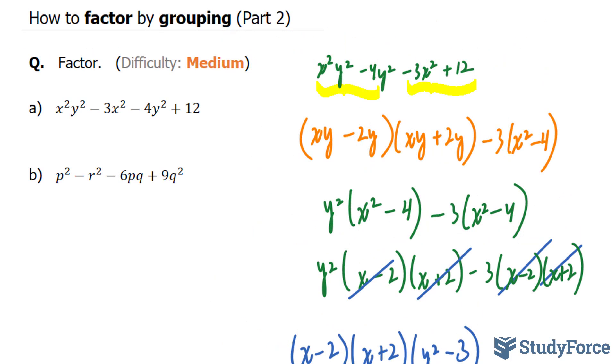When I first performed question b, I rearranged the terms so that this term was not included with the first three. So I get p squared minus 6pq plus 9q squared minus r squared.